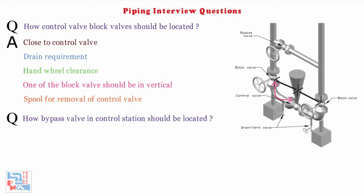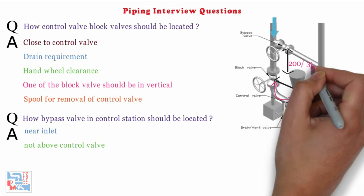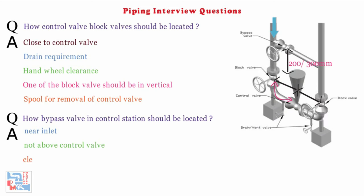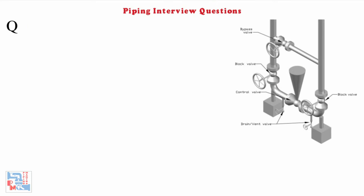Next: how should the bypass valve in a control station be located? The bypass valve should be near the inlet branch point, preferably not above the control valve. It should have a minimum 200 to 300mm clearance between the actuator and valve for removal of the control valve during maintenance.